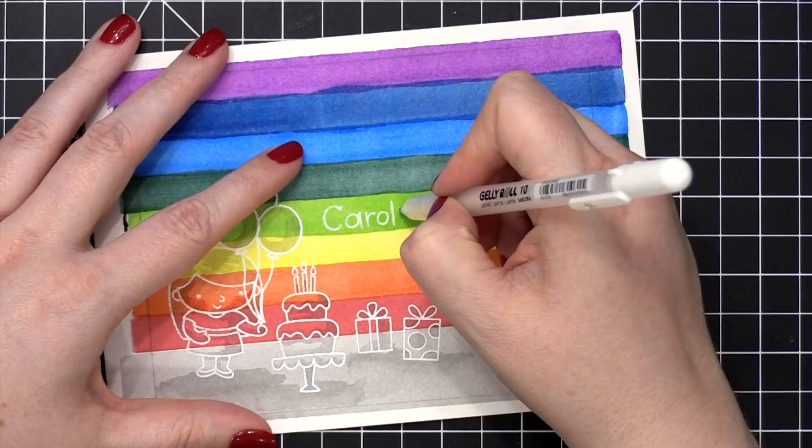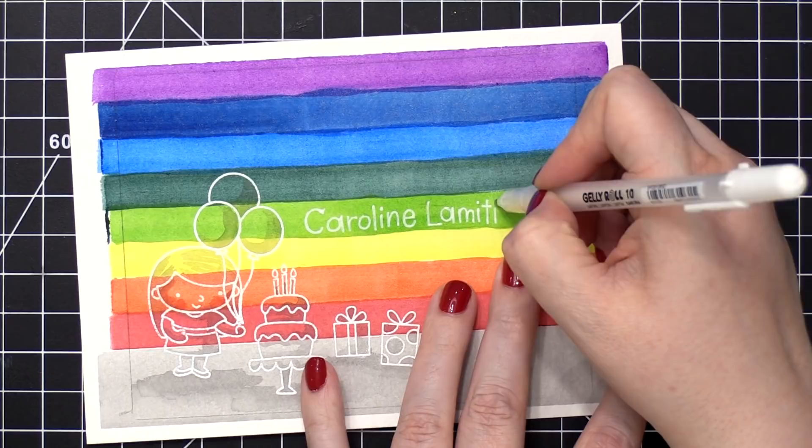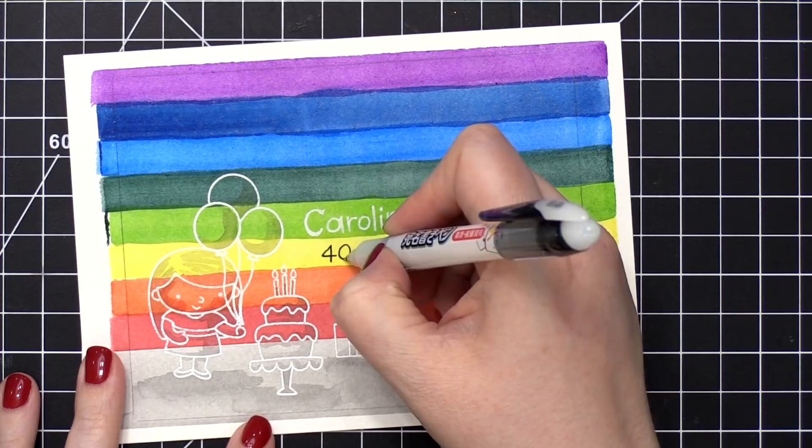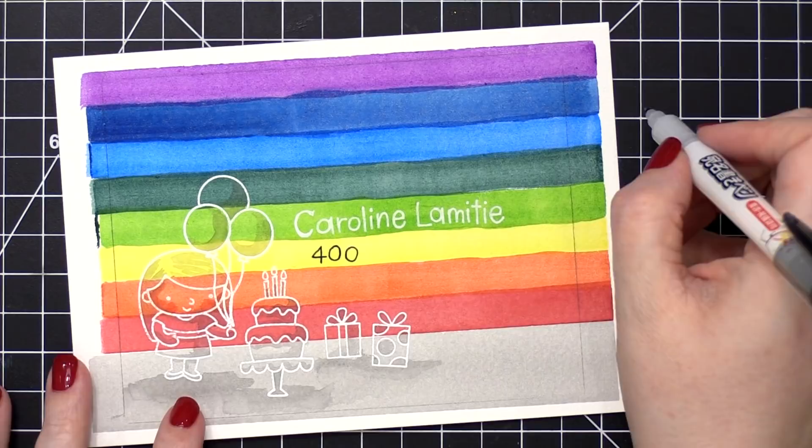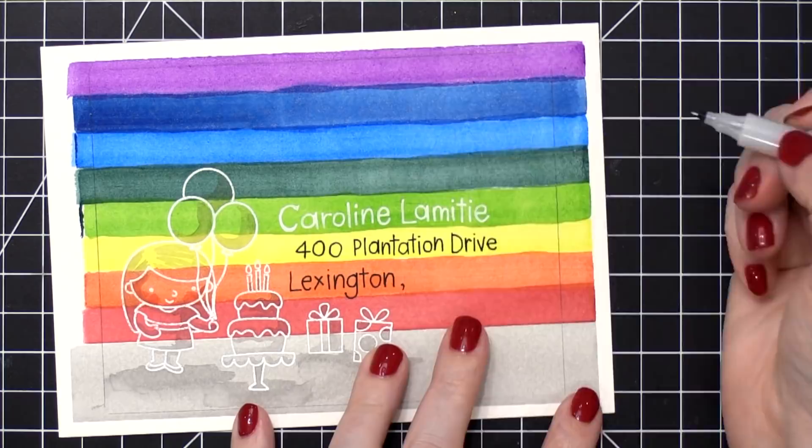As far as addressing the envelope, which is not an envelope yet, but it will be shortly, I used a white Gelly Roll pen for her name, and I'm using the Gelly Roll size 10, which is the bold pen. And then I moved to a black pen, and I did this because I realized that writing on top of that yellow stripe, there wouldn't be enough contrast. It wouldn't show the actual street address, so I moved to black and decided to do the rest of the address in black. Not only does it appear better on the yellow, but it also makes the rest of the address, which is the most important part, much more legible, and more likely to be delivered. Especially the zip code, you want the zip code to be nice and clear.